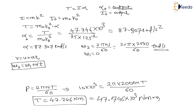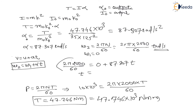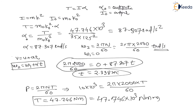Substituting the values: 2π × 2000 / 60 = 0 + 87.307 × t. Solving for time t, we get t = 2.398 seconds. This is the answer. Thank you dear students. In the next lecture we will see one more numerical on plate clutch.